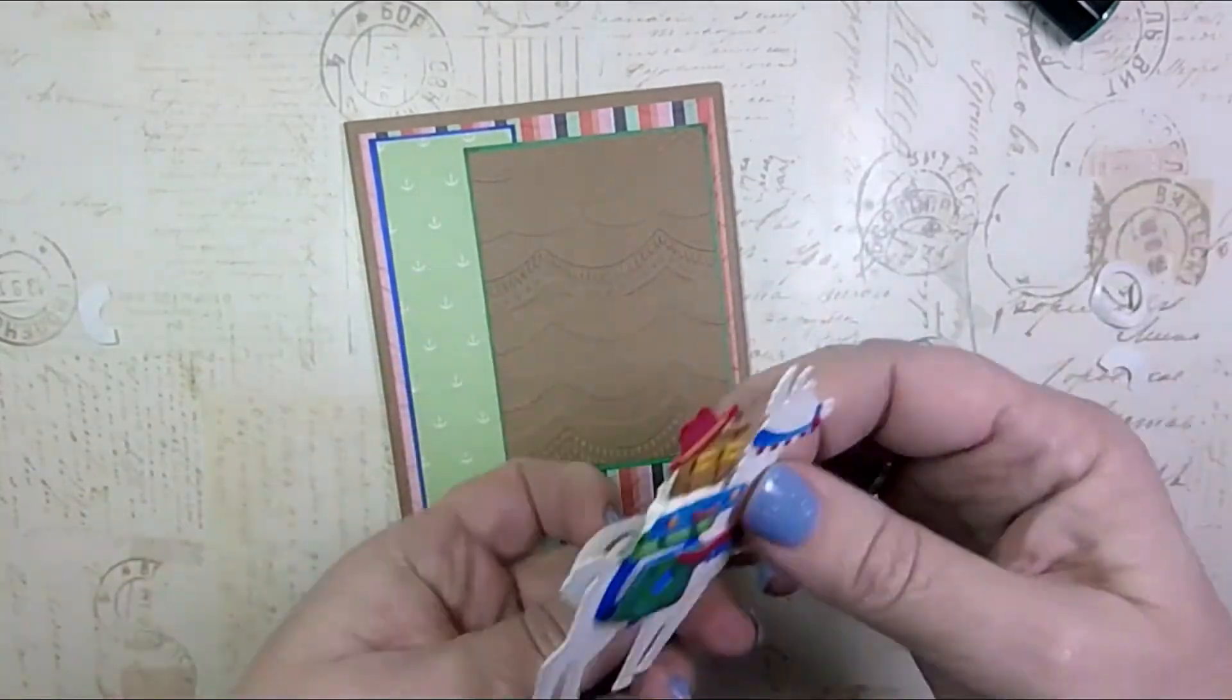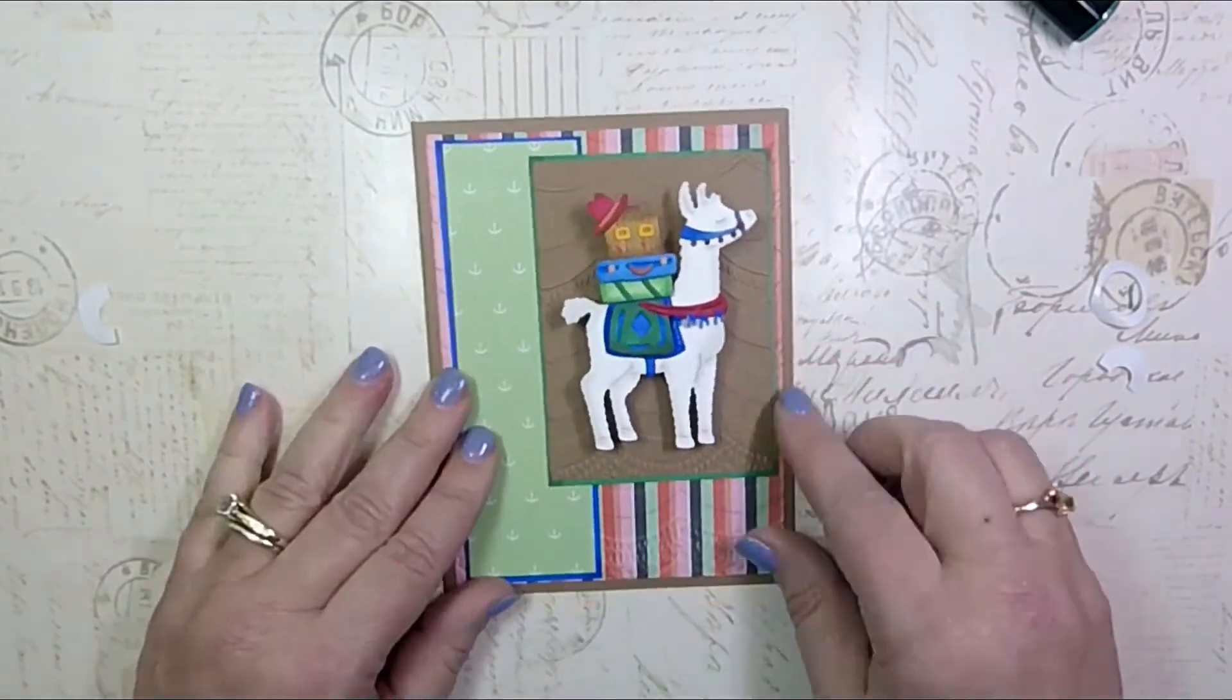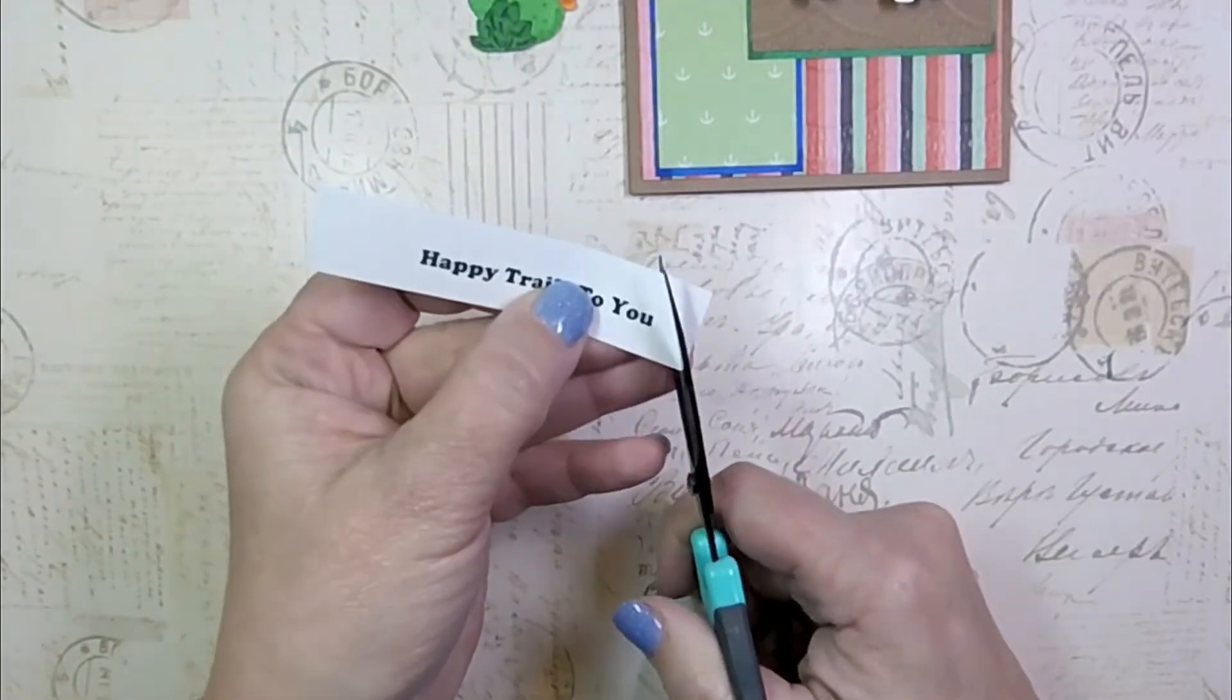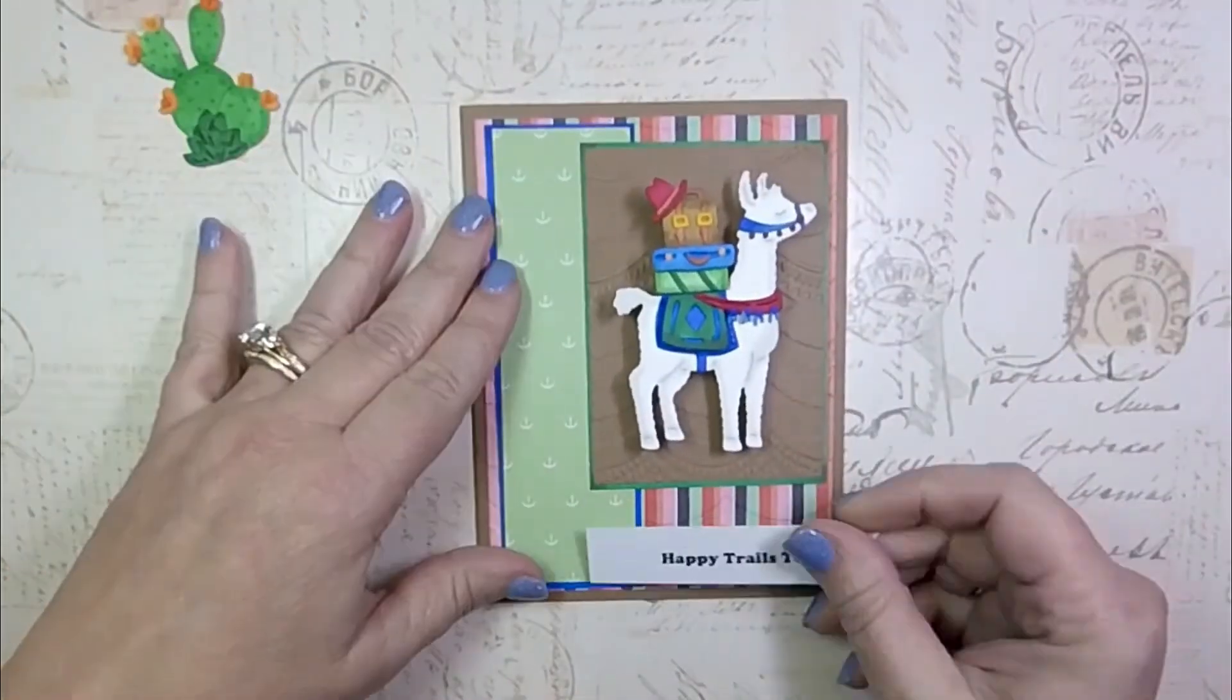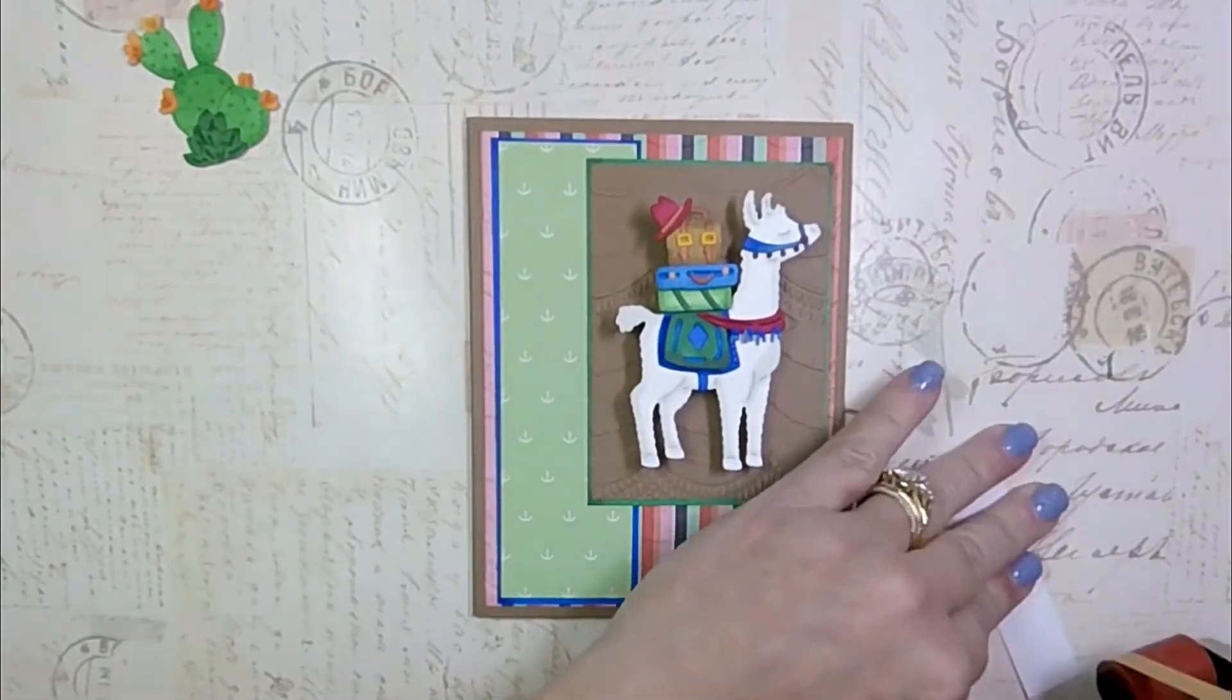And now you can understand why I built up the packages like I did so it could be one piece, and he's so cute when he moves around like that. Now the sentiment I decided to use was Happy Trails to You, and I just made that on my computer. I cut a fishtail as you can see here.